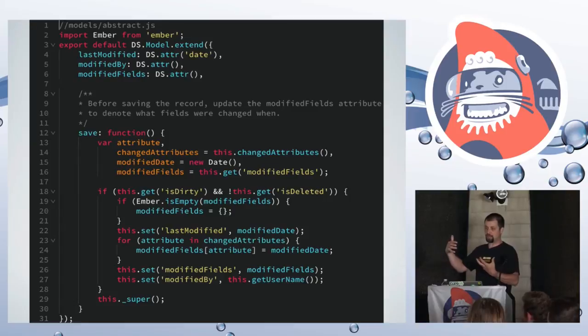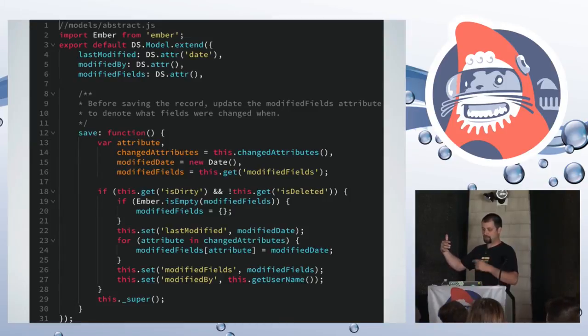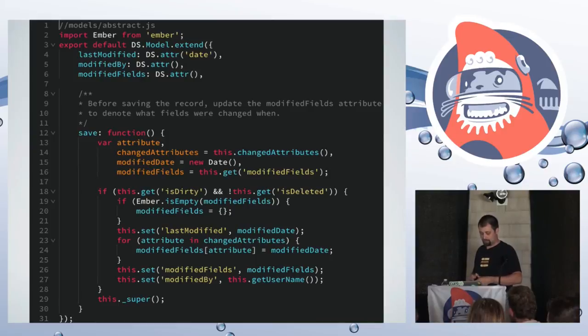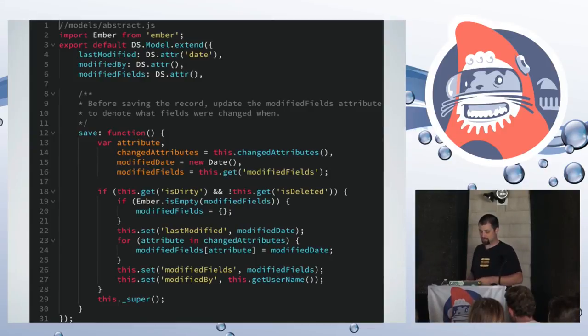We keep track of timestamps of what fields were changed when. So if we get two different copies of the same record, we can compare: you changed it yesterday, I changed it today — I win. And we just do that on the server side to resolve those conflicts.